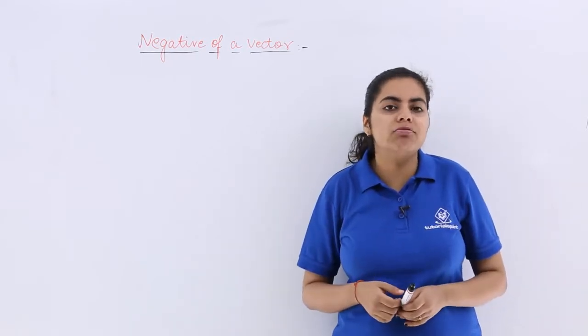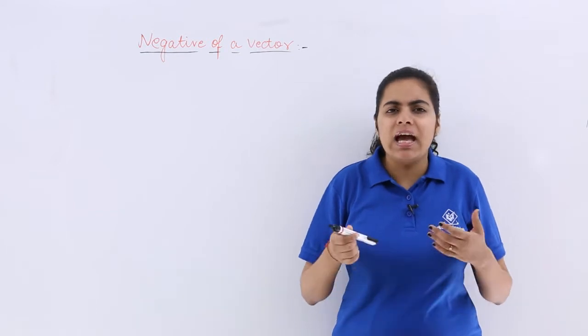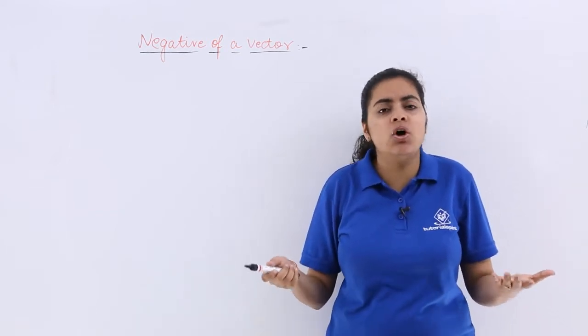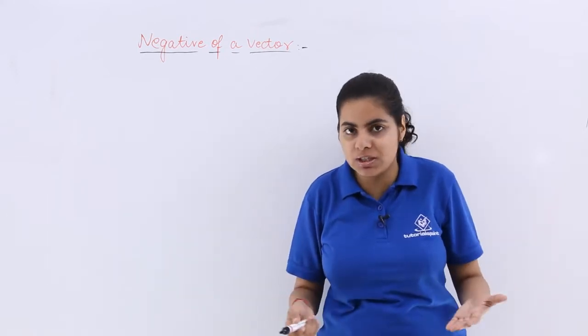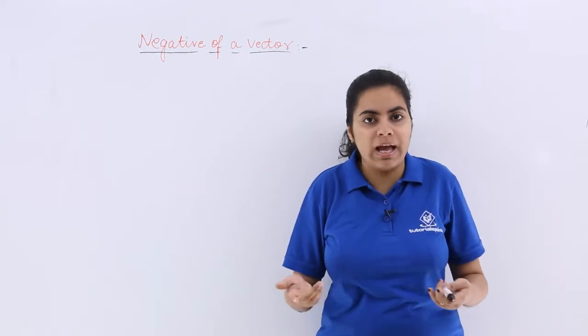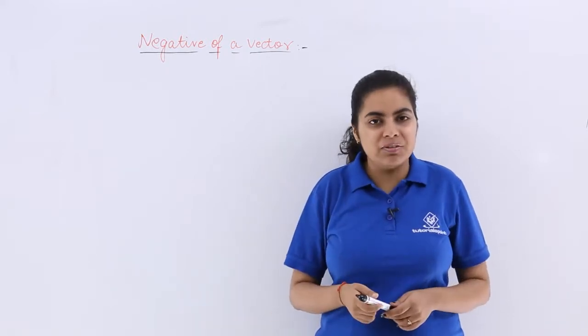So what would be negative? The direction. And direction being negative, there is no such rule in mathematics that west will always be positive, east will always be negative. Have you ever heard that? Never.